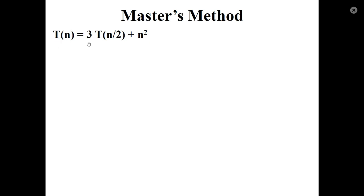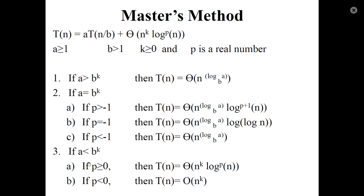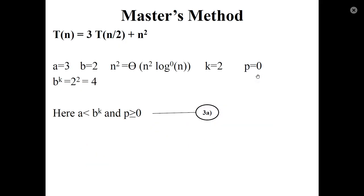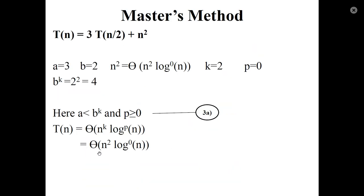Next question: T(n) = 3T(n/2) + n². Here a = 3, b = 2, and n² = Θ(n² · log⁰(n)), so k = 2 and p = 0. Find b^k: 2² = 4. Since a = 3 is less than b^k = 4, and p = 0 ≥ 0, T(n) = Θ(n^k · log^p(n)) = Θ(n² · log⁰(n)) = Θ(n²).